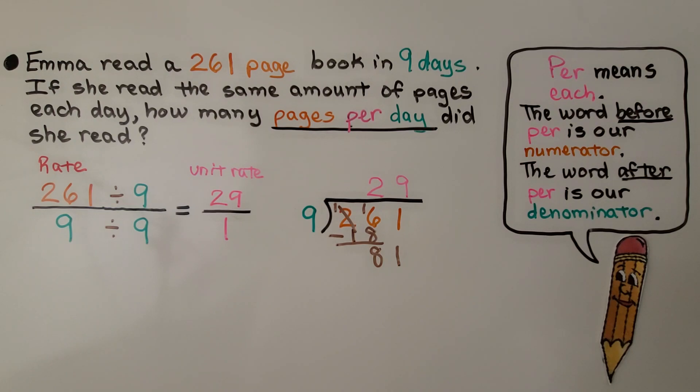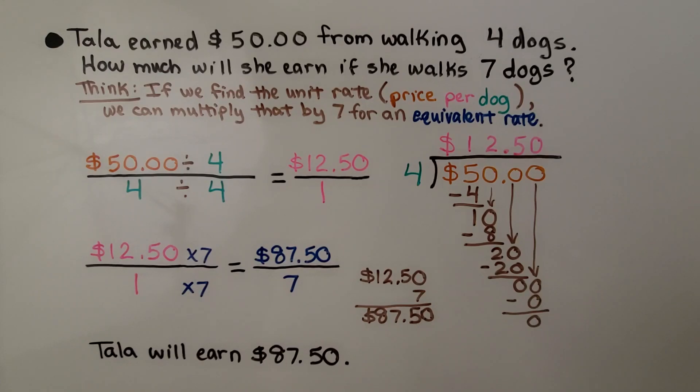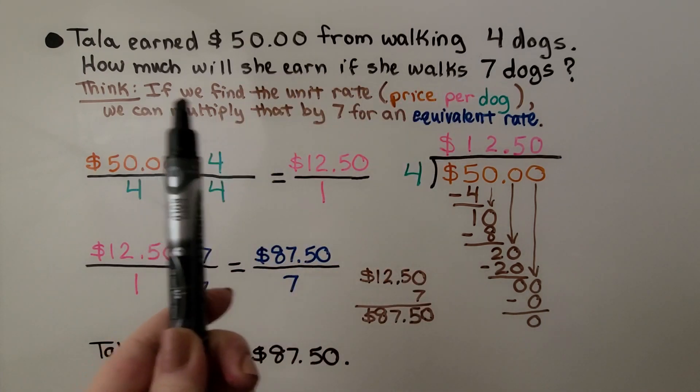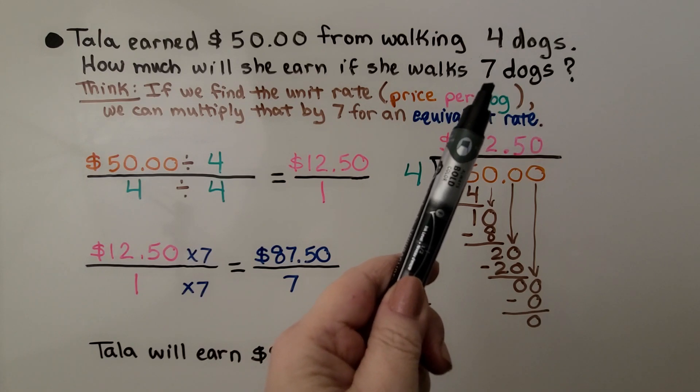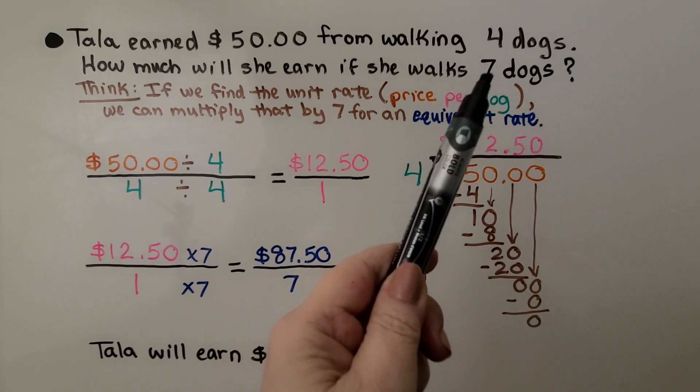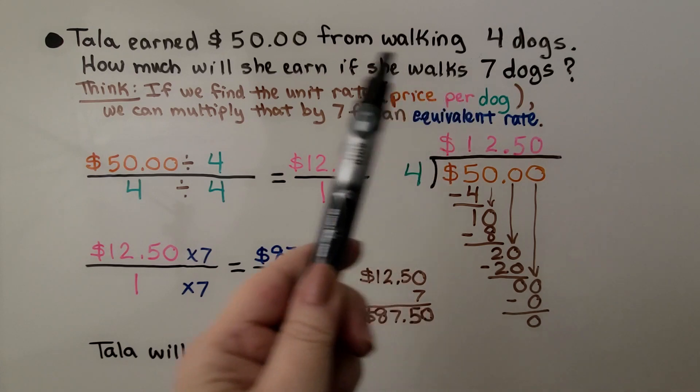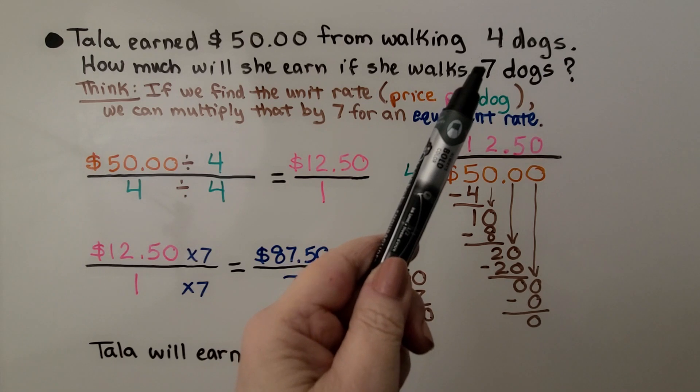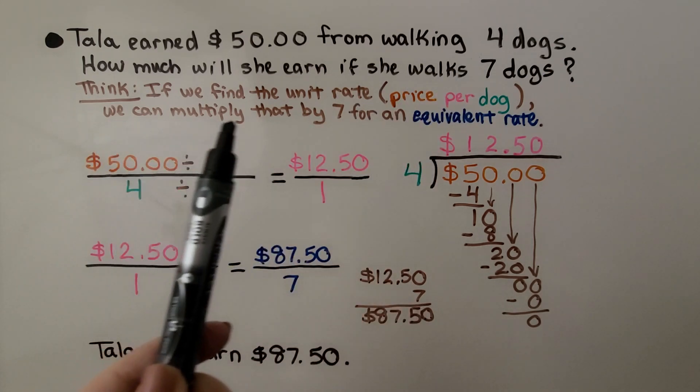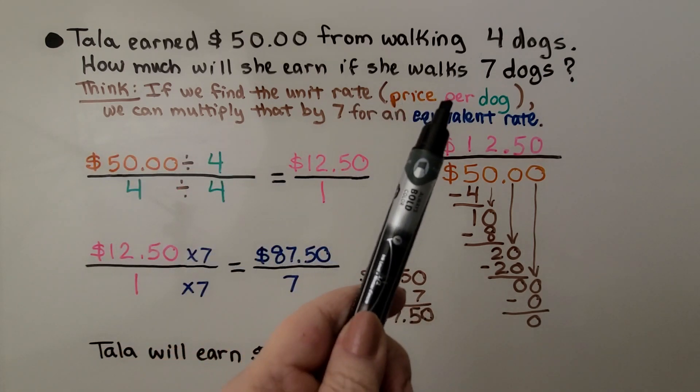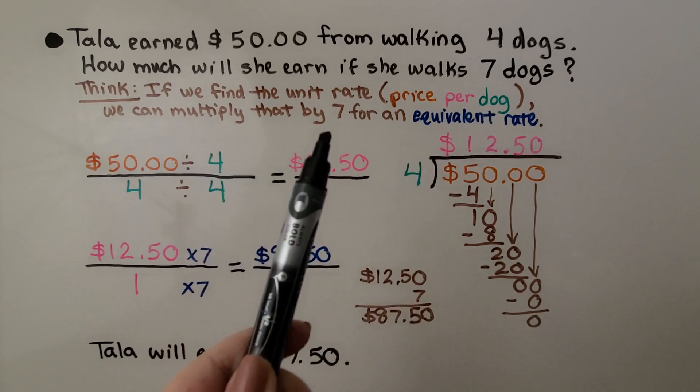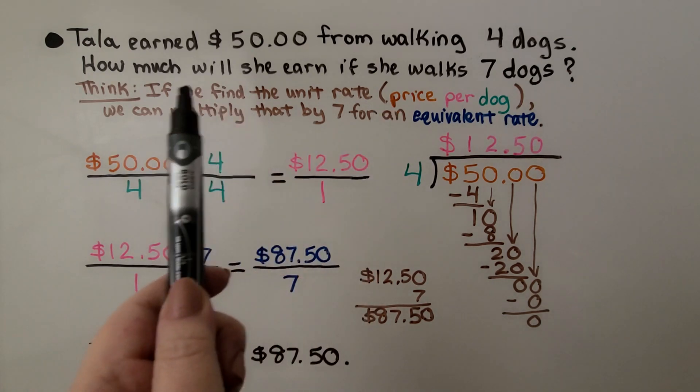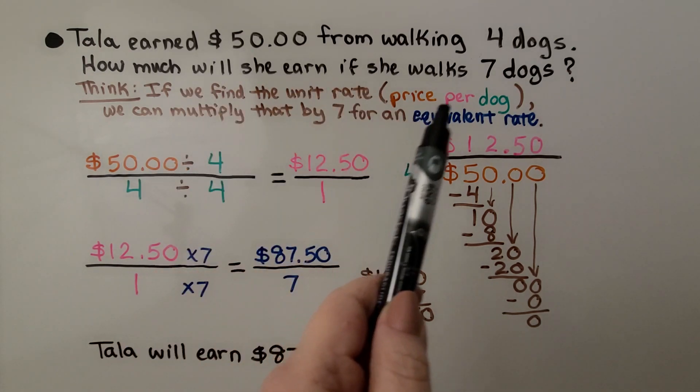Tala earned $50 from walking four dogs. How much will she earn if she walks seven dogs? If this said eight, we could just double it. But we can't double it. This is going from four to seven. So if we can find the unit rate, the price per dog, we can multiply that by seven for an equivalent rate. Here we turned these words into price per dog.